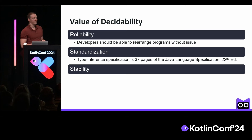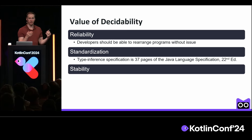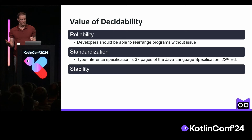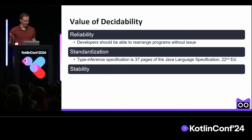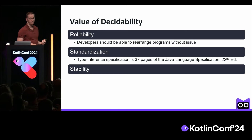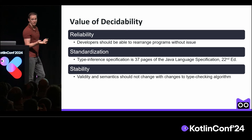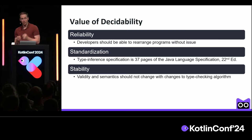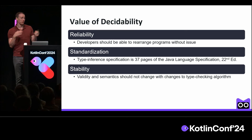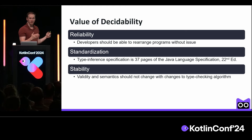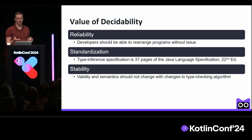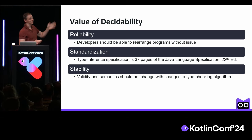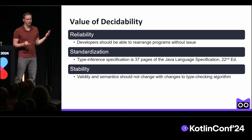Another problem that's come up is stability of your code — you have code you've written now, and you'd like it to keep running the same way. The Java community found that due to issues of decidability, certain updates to the type checker will actually change the behavior of your code. If you improve the type inference algorithm, it can change which methods get resolved in which ways. That's not something Kotlin developers should have to worry about. So decidability can lead to better stability across versions.